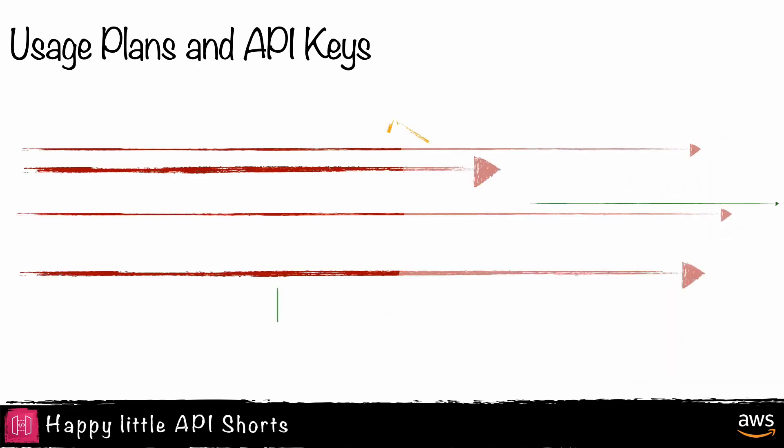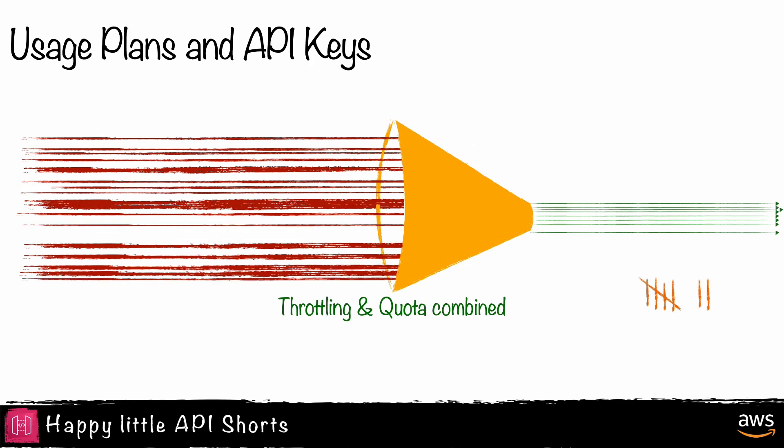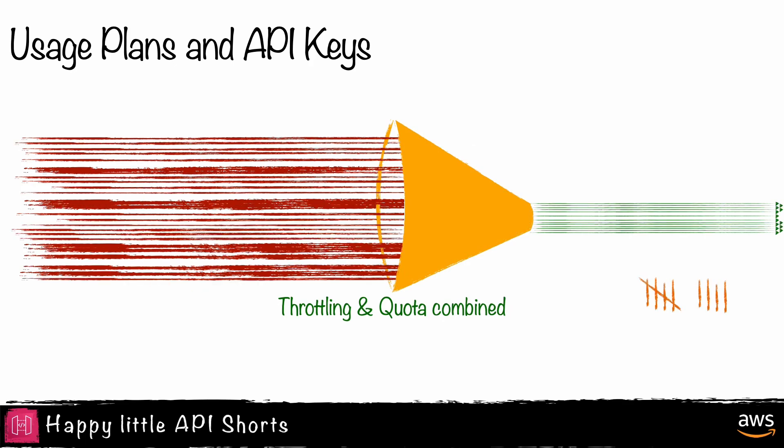By combining these two examples, I create an API that only allows 15 requests per second with a burst limit of 30 and caps the number of requests to 50 over a 24-hour period.